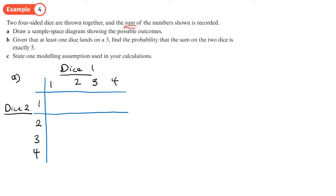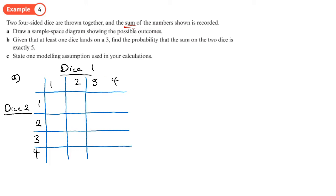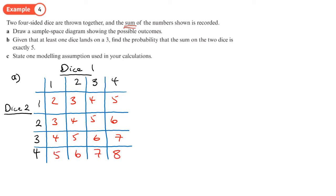On this question we work out the sum of the numbers on the dice — just add them and put them in the grid. So the sums are: 2, 3, 4, 5; 3, 4, 5, 6; 4, 5, 6, 7; 5, 6, 7, 8. There's the sample space diagram for part A.